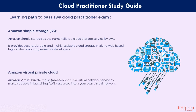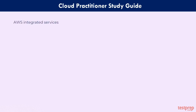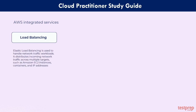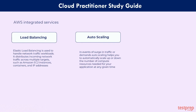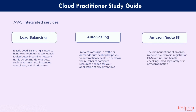Amazon VPC is a virtual network service that enables you to launch AWS resources into your own virtual network, closely resembling your on-premise network, with the added benefit of AWS infrastructure scalability. Third, AWS Integrated Services. You will proceed to learn about some integrated services that are part of the AWS cloud. Load Balancing: Elastic Load Balancing handles network traffic workloads, distributing incoming traffic across multiple targets such as Amazon EC2 instances, containers, and IP addresses. Auto Scaling: in events of surge in traffic or demand, auto-scaling automatically scales up or down the compute resources needed for your application. Amazon Route 53: its main functions are domain registration, DNS routing, and health checking, used separately or in any combination.